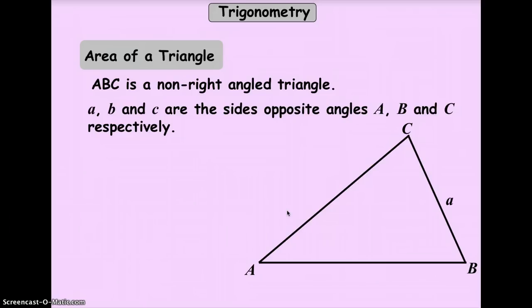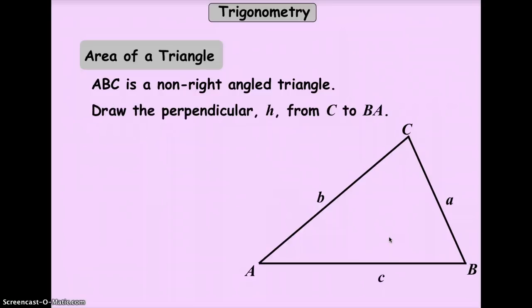For angle A, I have a pointer here, its corresponding side is the side opposite to it, which we're going to label a. And then the same thing with B. Here's your angle B, and then its opposite should be side b. And then the last one is side c, which is opposite to angle C. You already learned how to do this and how to label your triangle accordingly or appropriately.